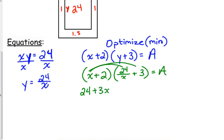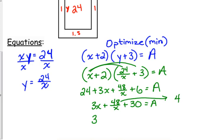X times 3, 3X. We've got 48 over X in the middle, and 6. Let's simplify just a smidge by adding the 24 and the 6 together. That really doesn't matter because we're going to take the derivative, and it's going to be 0. So when I do take the derivative, derivative of 3X is 3. What's the derivative of 48 over X? That's 48 times X to the negative first. So that would be negative 48X to the negative 2. Derivative of 30 is 0. That's equal to A prime.